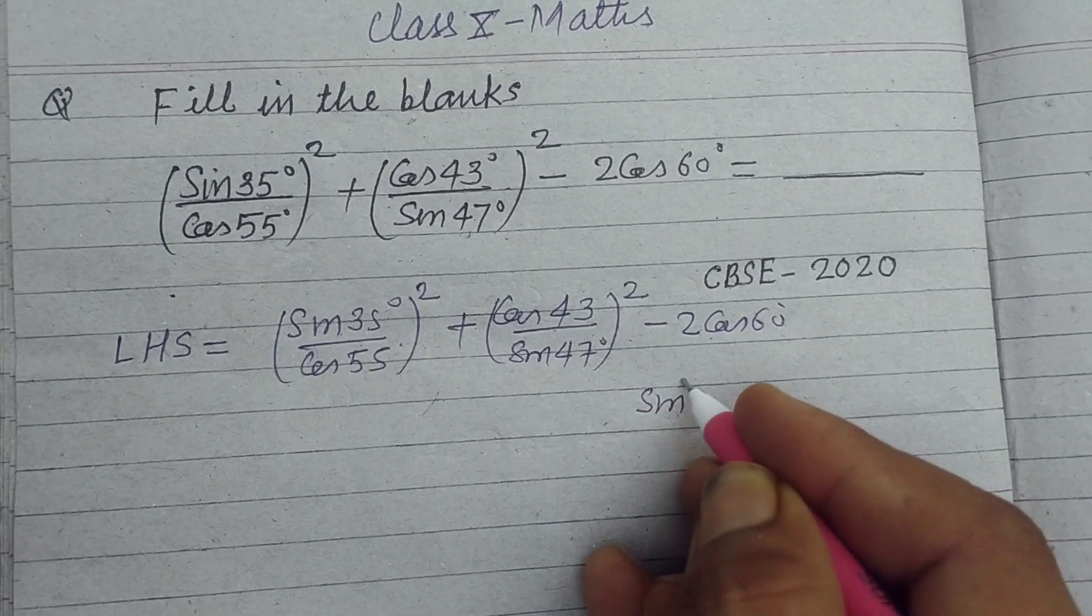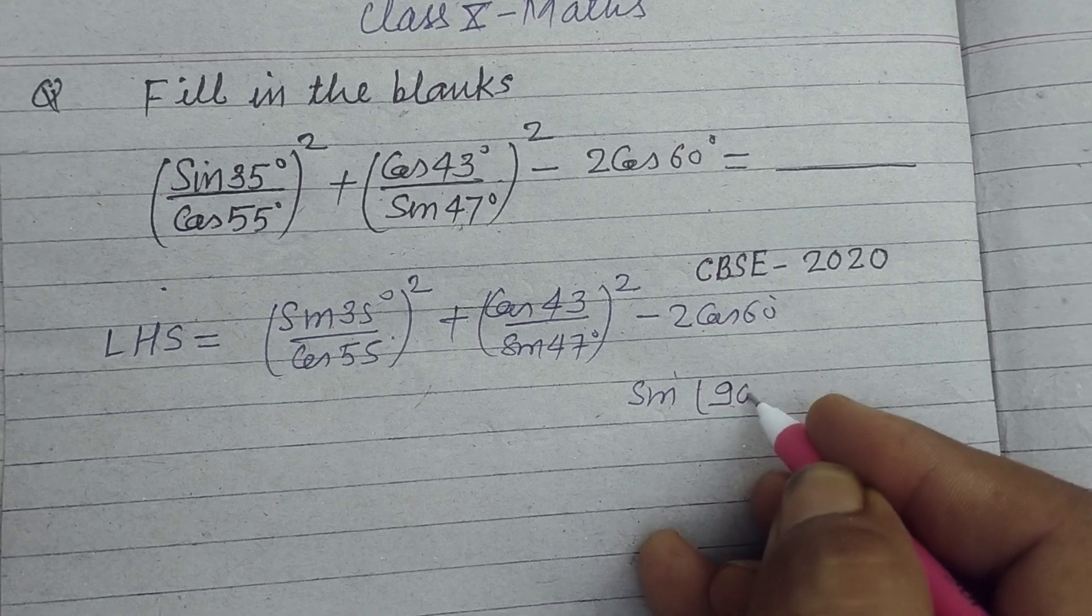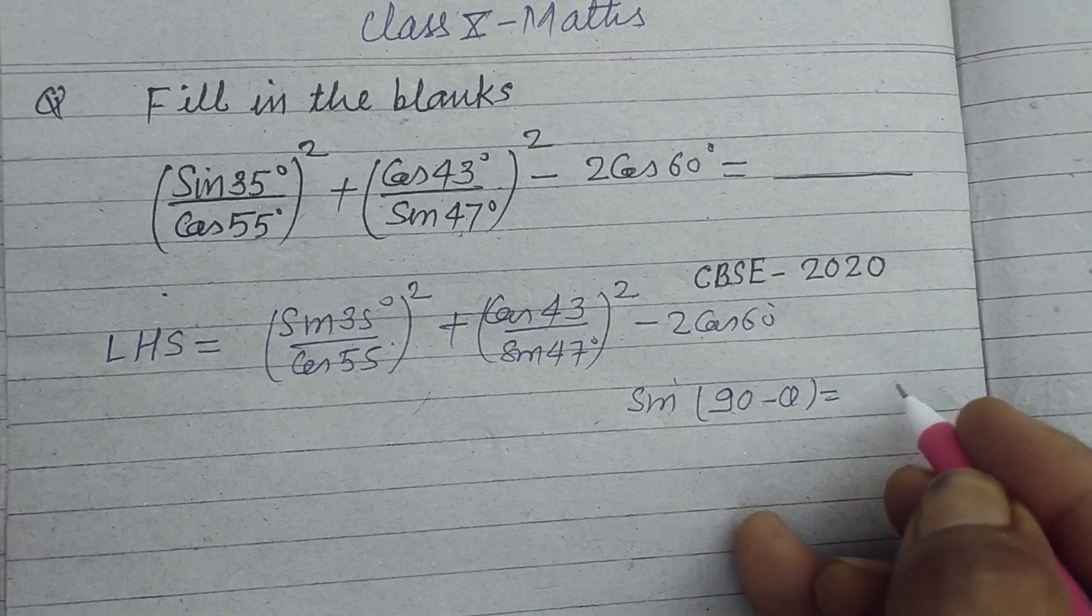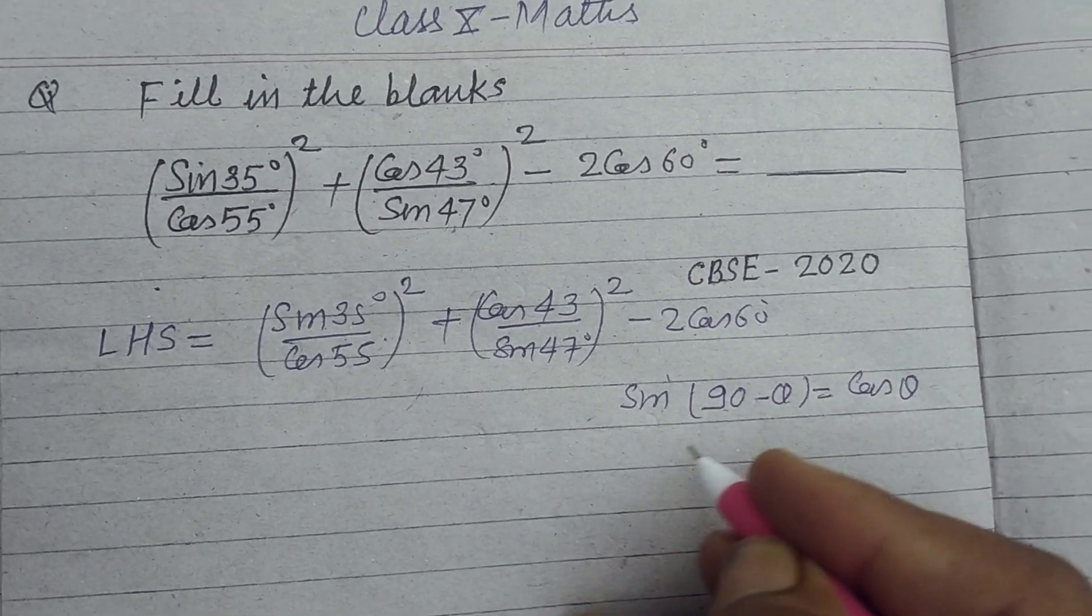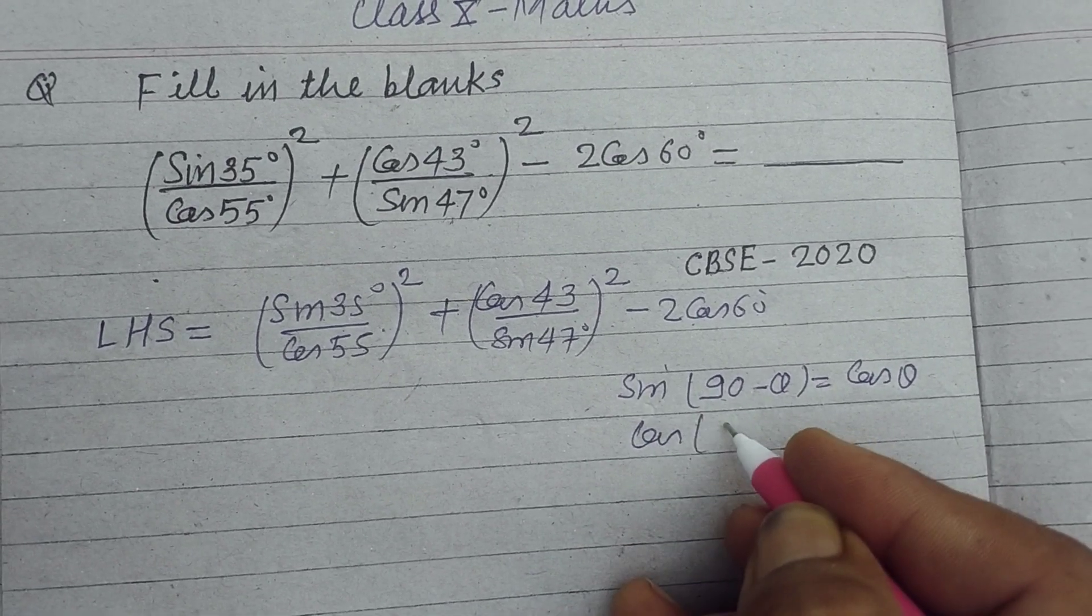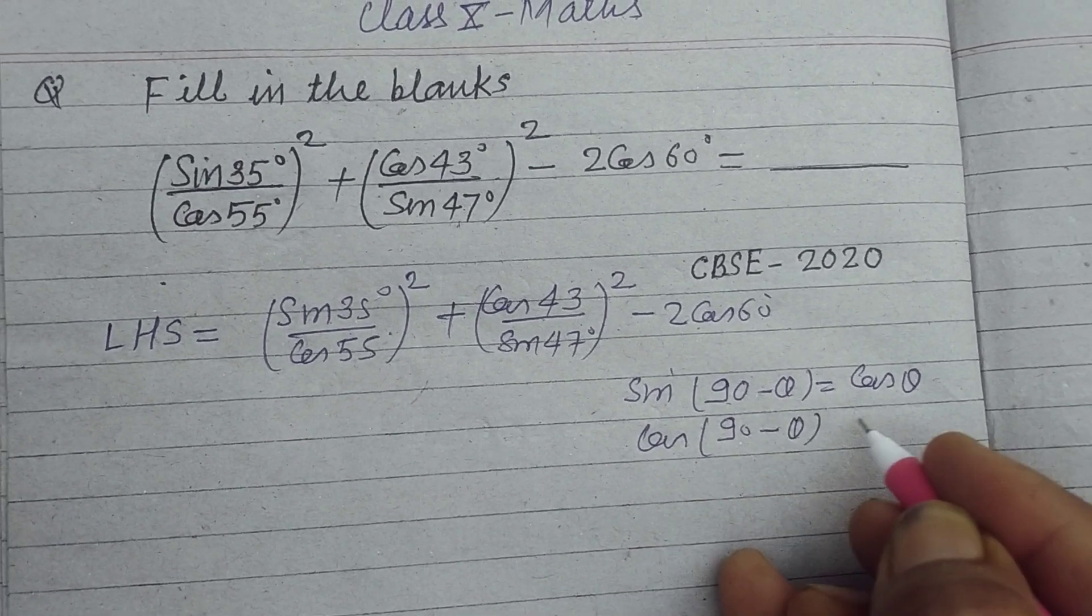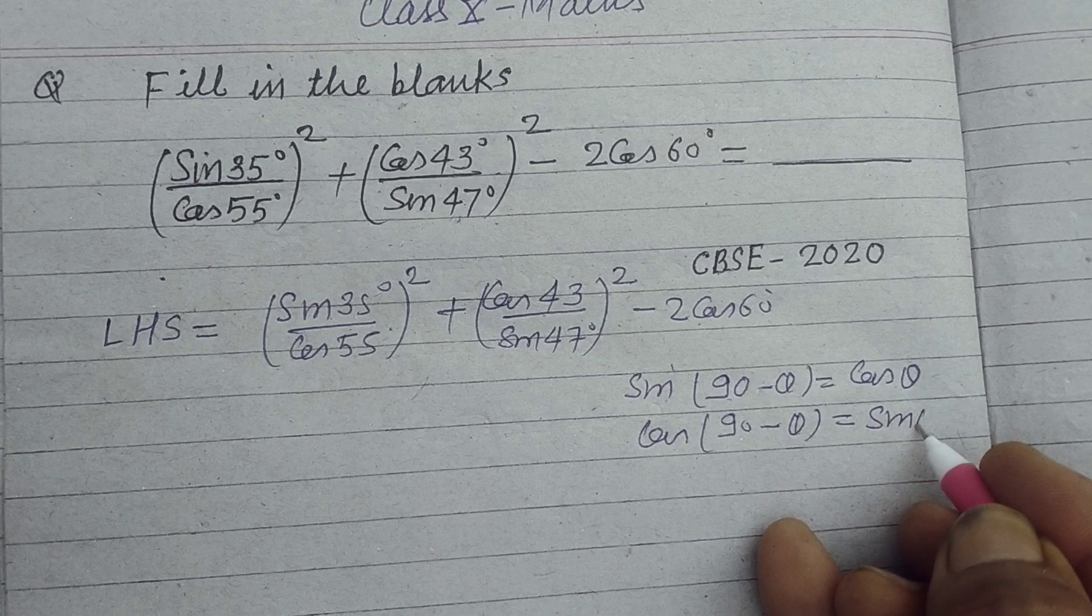You know that sin(90° - θ) equals cos θ and cos(90° - θ) equals sin θ.